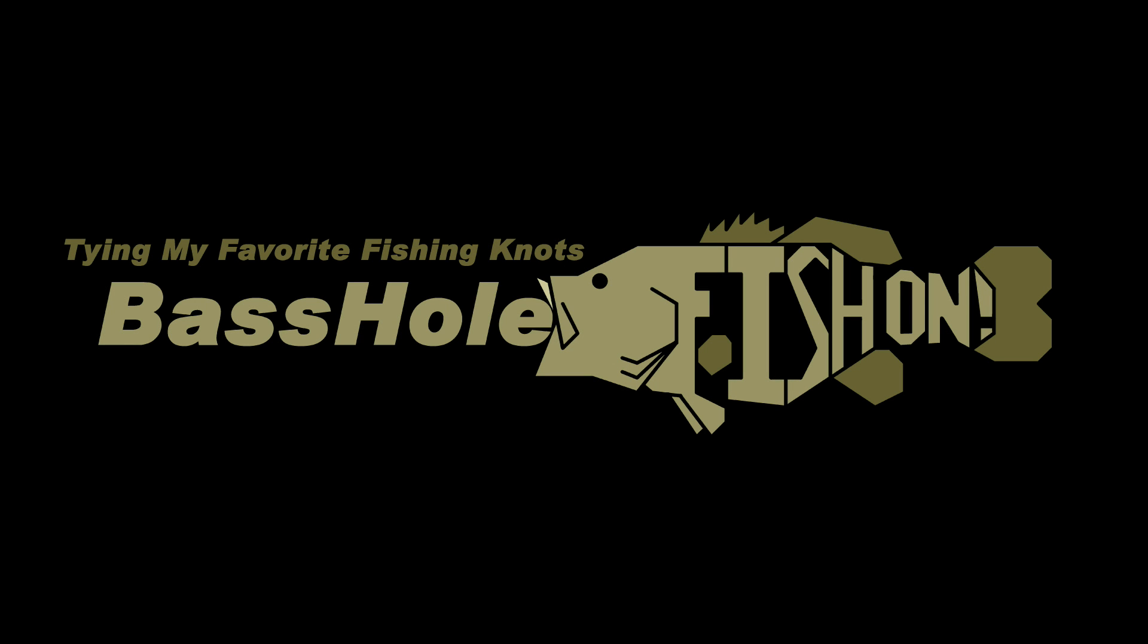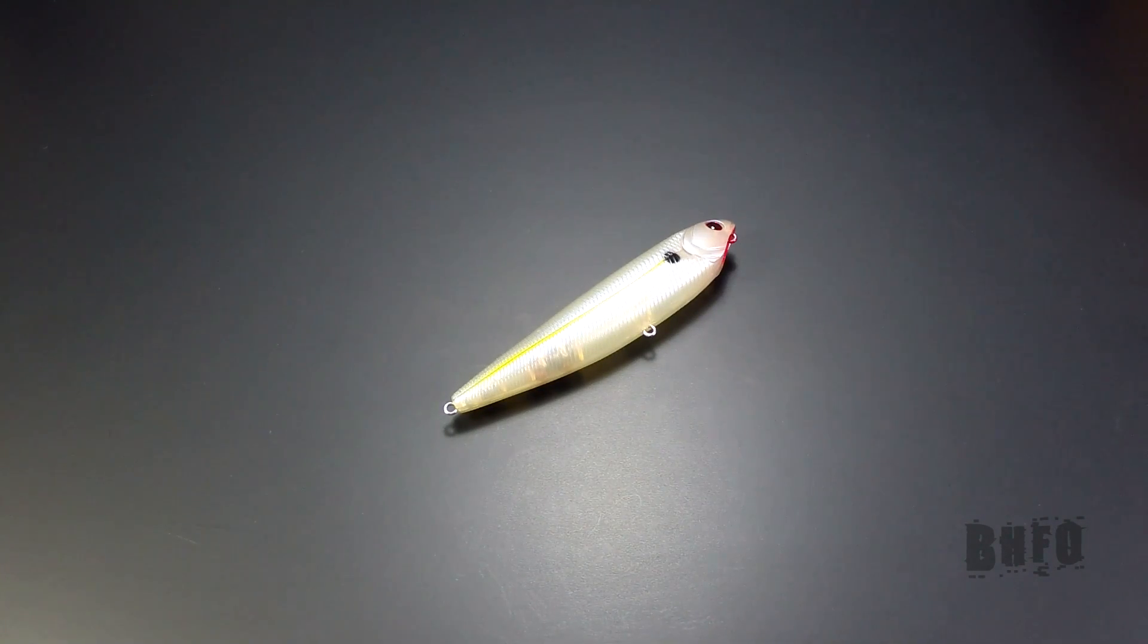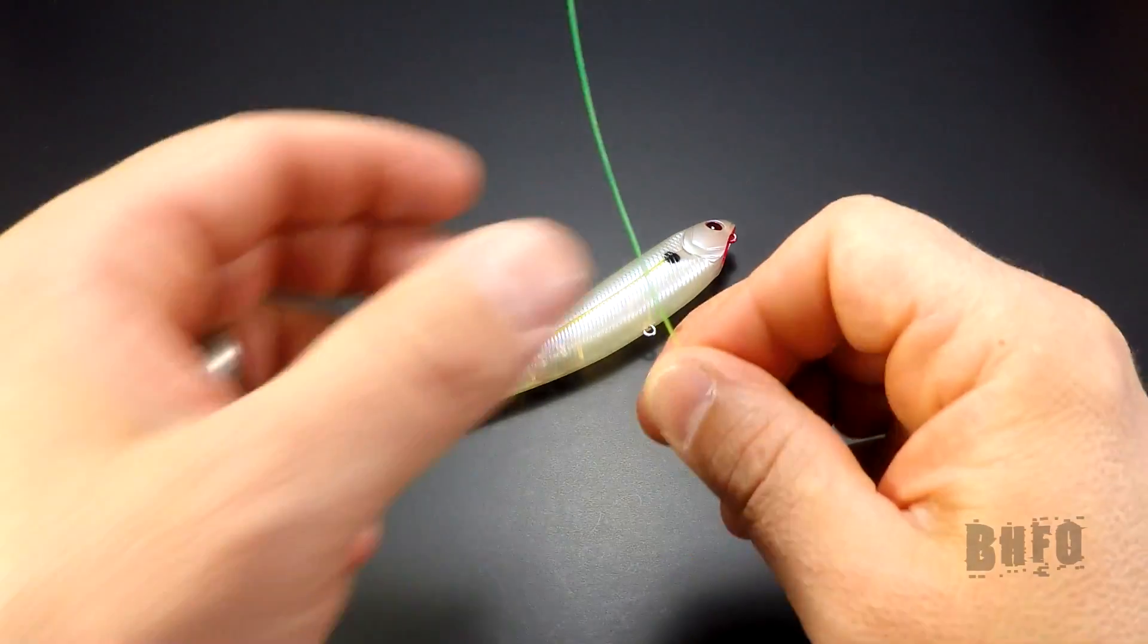Basshole here. Today I'm going to show you how I tie the non-slip mono loop knot. I use this knot to tie monofilament and braided line to top water hard baits. Let's get started.